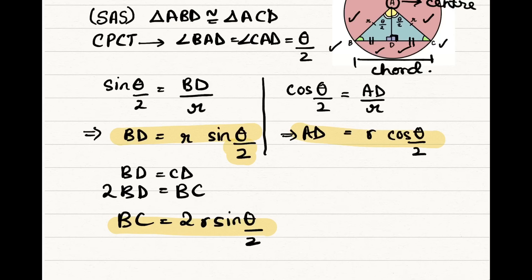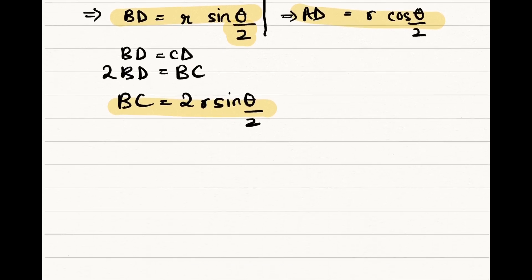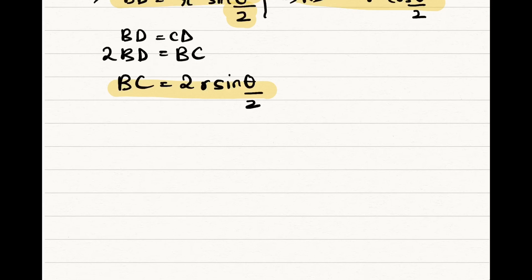The most basic definition of a triangle is that area of a triangle is equal to half into base into height which is equal to half into AD into BC.